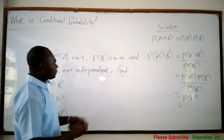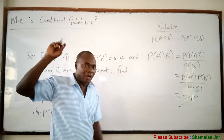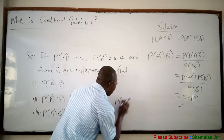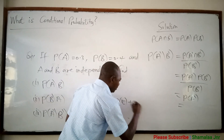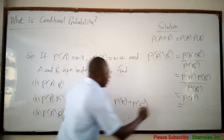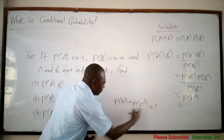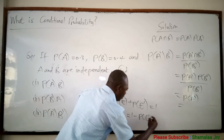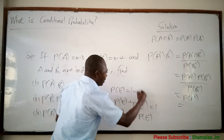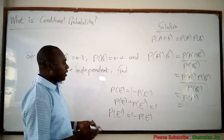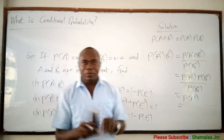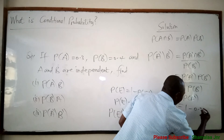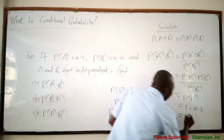Now viewers, look on the board. The probability of A is 0.3. As I explained in my video on introduction to probability, the probability of an event E plus the probability of the complement of that event is equal to 1. This means the probability of the complement is equal to 1 minus the probability of the event. So the probability of A complement will be 1 minus 0.3, which gives us 0.7.